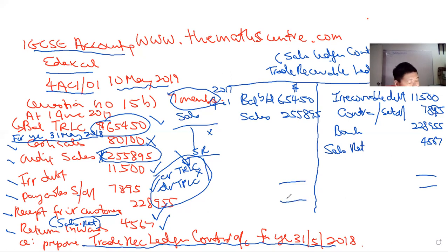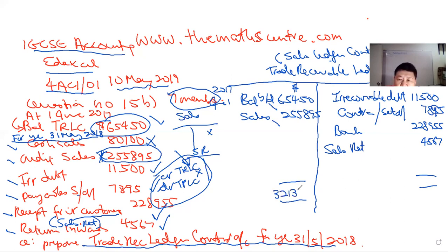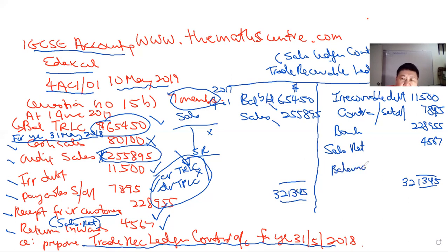You can play this video again to review my comments. Now to balance the account: the debit side — 65,450 plus 255,895 — comes to 321,345, which is bigger than the credit side. Write the total 321,345 on both sides, then insert the balancing figure — balance carried down — which is 321,345 minus the irrecoverable debt, the contra, the bank receipts, and the sales returns.